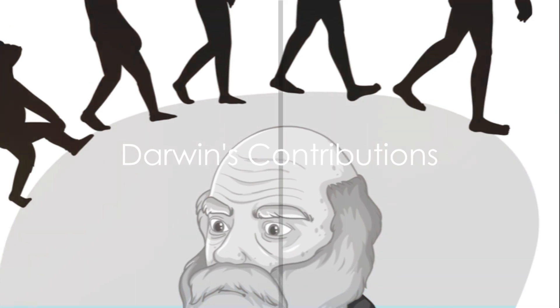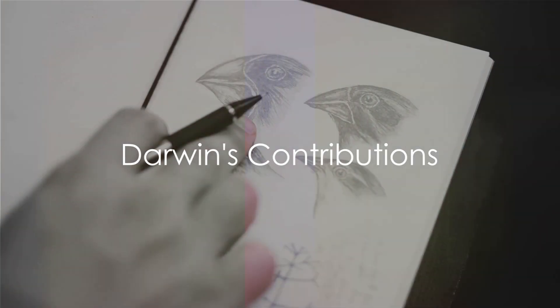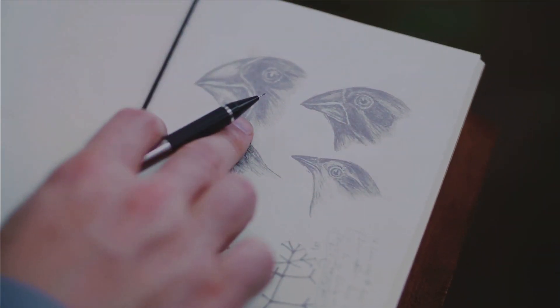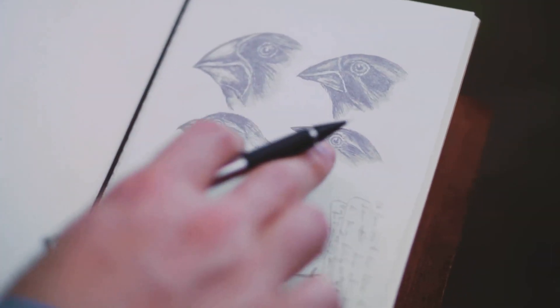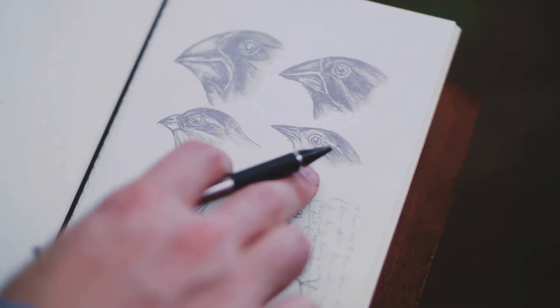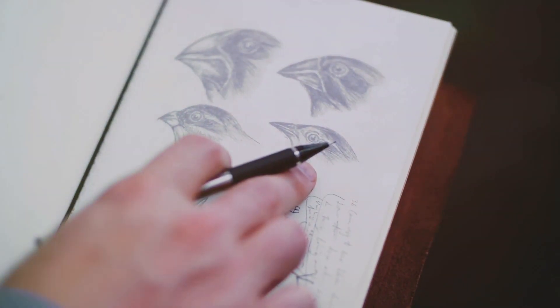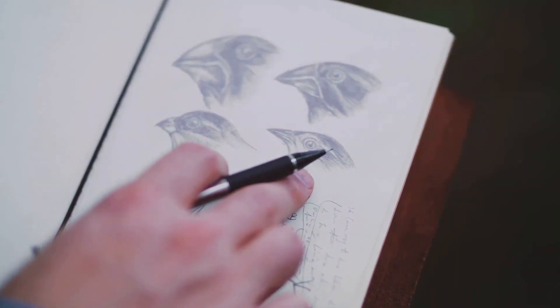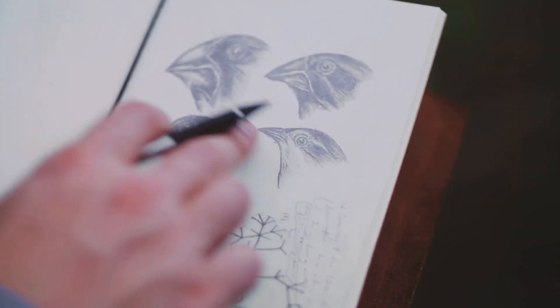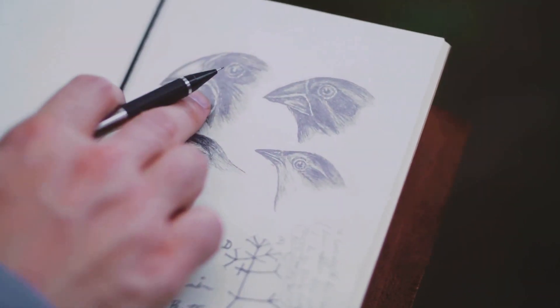Moving on to Chapter 2: Darwin's Contributions. We see Ekman paying homage to Charles Darwin's seminal work, The Expression of the Emotions in Man and Animals.